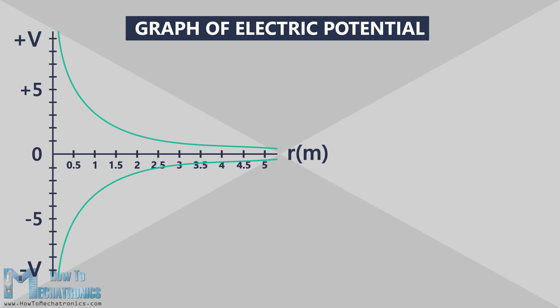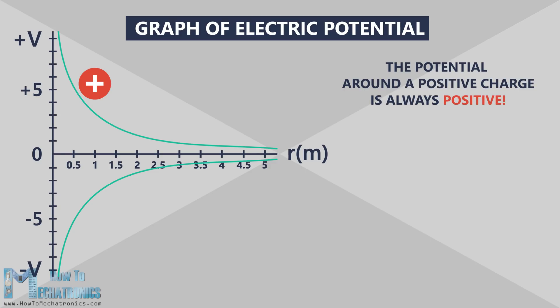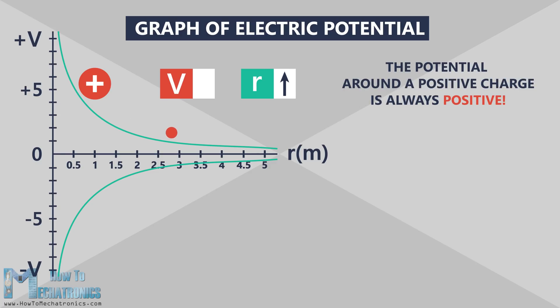Let's take a look at this graph of electric potential. The x-axis shows the distance away from the charge, while the y-axis shows the electric potential at a certain point. Here we have a positive charge, and the potential around a positive charge is always positive. As you move away from the charge, as the distance increases, the potential becomes less positive and decreases, getting closer and closer to zero.